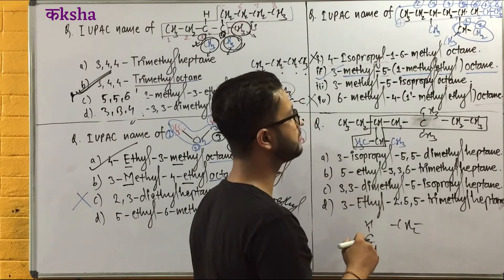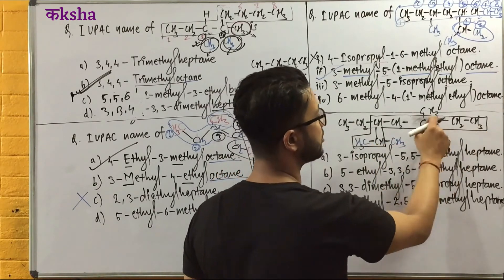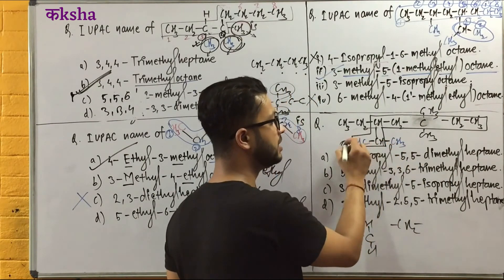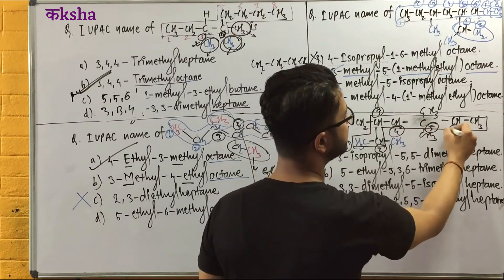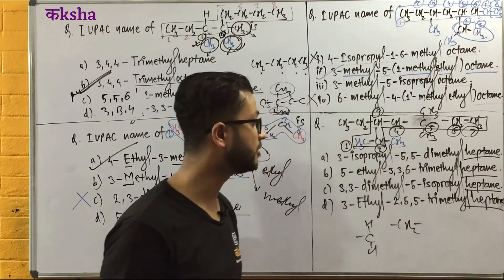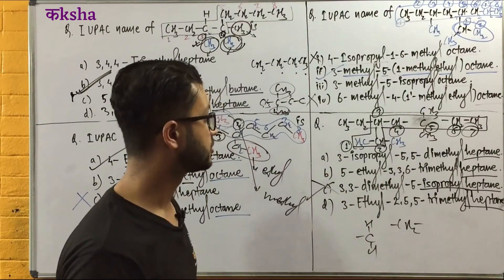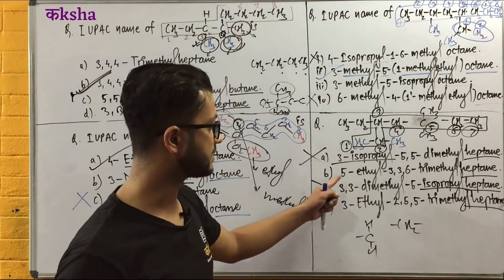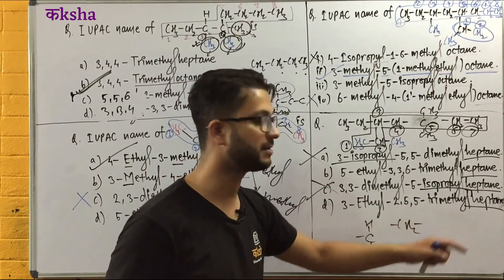Now what do you do? How do you do numbering? It's a numbering — not first but second. 1, 2, 3, 4, 5, 6, 7. We put it in the first half. So what is the problem here? Isopropyl. Here, why isopropyl? 5-ethyl, 3,3,6-trimethyl, 3-ethyl, 2,5,5-trimethyl.